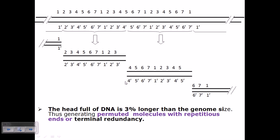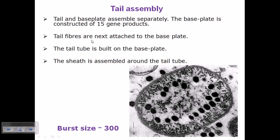Now for tail assembly: the tail and baseplate assemble separately. The baseplate is constructed of 15 gene products. After baseplate assembly, the tail fibers are attached to the baseplate, and the tail tube is built on